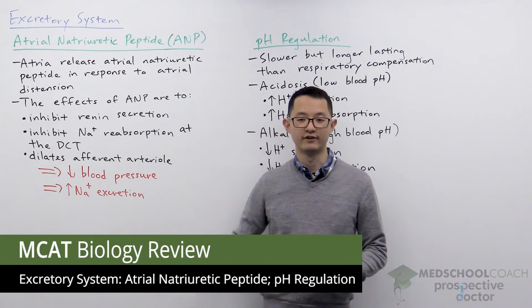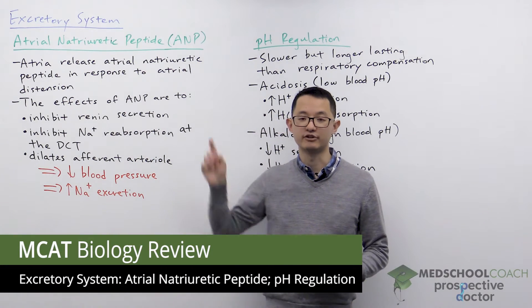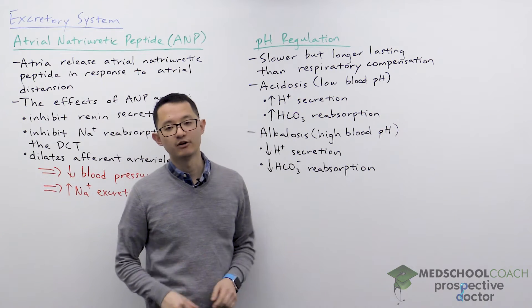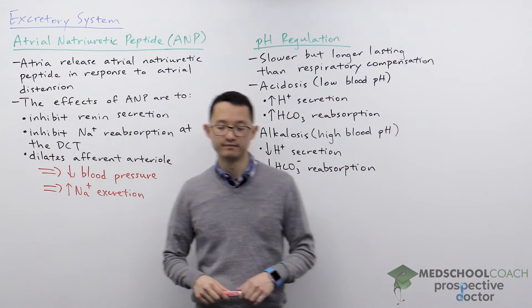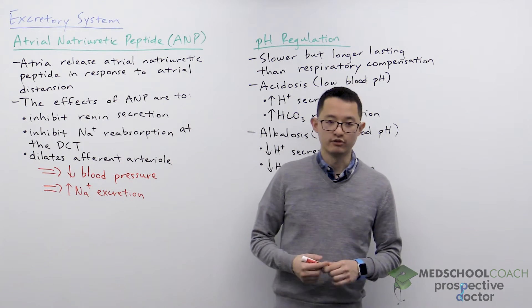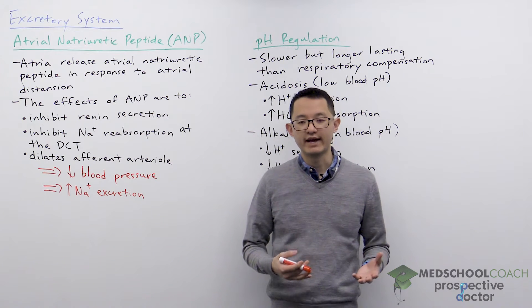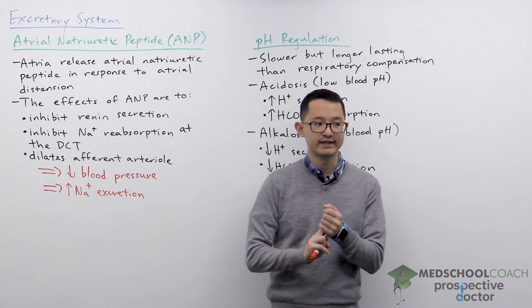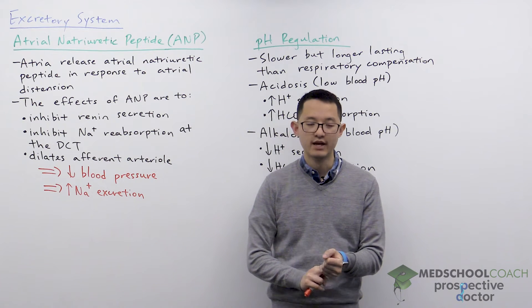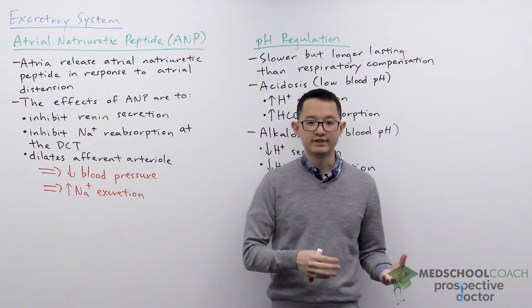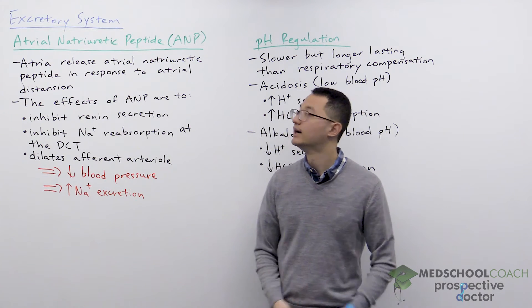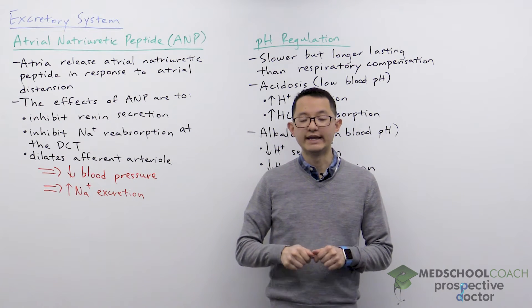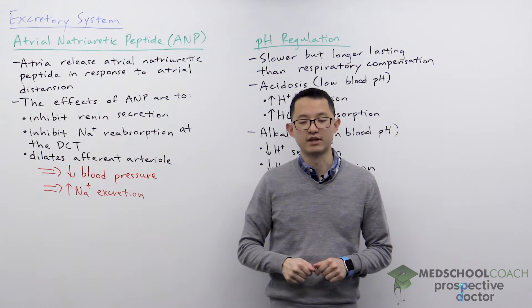In this video we're going to go over the atrial natriuretic peptide and how the kidney helps to regulate blood pH. In the last video we talked about how the juxtaglomerular apparatus and the renin-angiotensin-aldosterone system respond to decreases in blood pressure. ANP is how the body responds to increases in blood pressure.